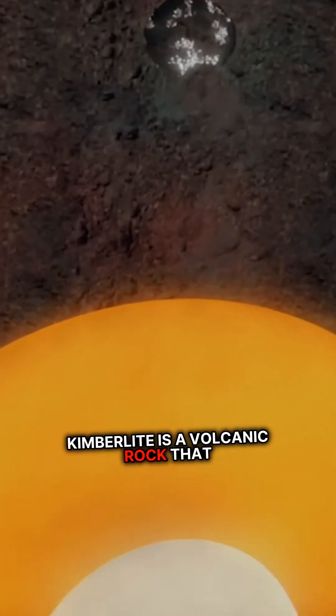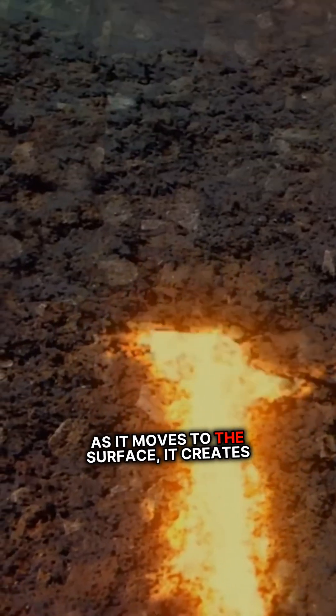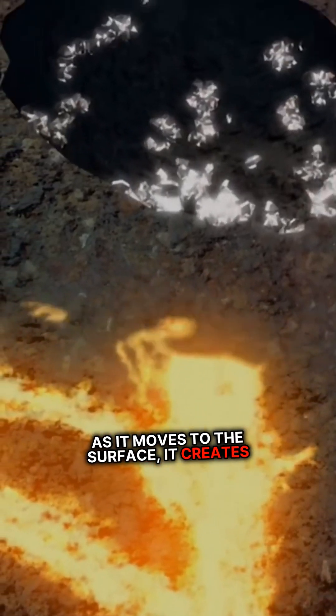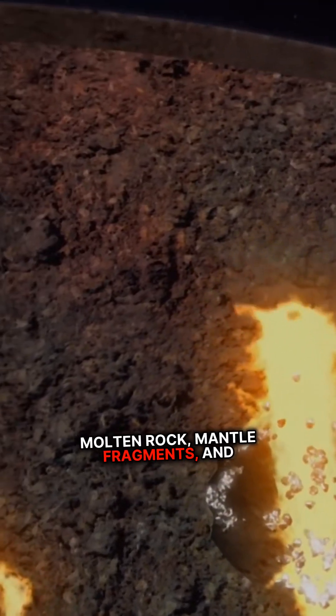Kimberlite is a volcanic rock that forms deep within the Earth. As it moves to the surface, it creates a carrot-shaped pipe filled with molten rock, mantle fragments, and diamonds.